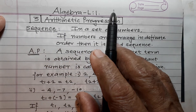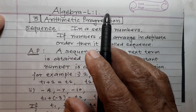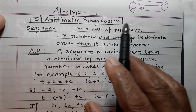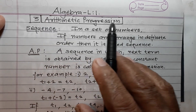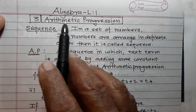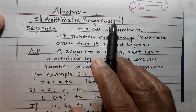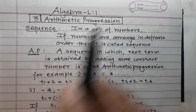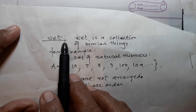Hello my dear students. Algebra lecture number one, chapter number three: Arithmetic Progression. In this lecture I am going to explain you about arithmetic progression. First, try to understand what is a set.